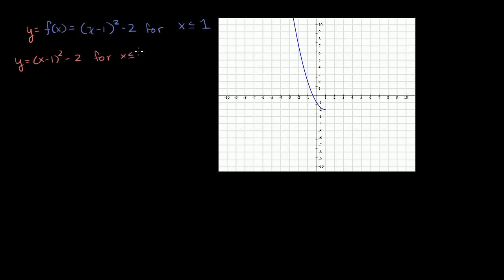We know x ≤ 1. Right now we have y solved for in terms of x. To find the inverse, we're going to want to solve for x in terms of y, and we're going to constrain y similarly. Looking at the graph, this function is defined for y ≥ -2.